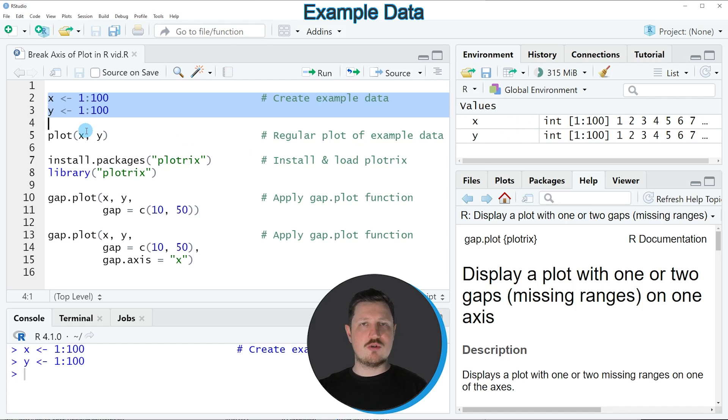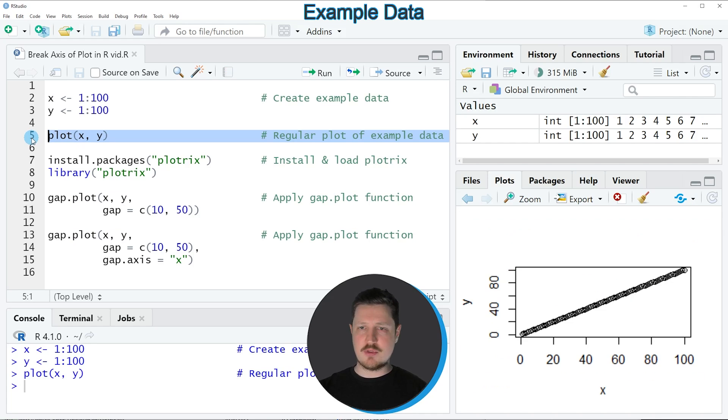So if you want to draw these data in a regular plot using base R, then we can apply the plot function as you can see in line 5 of the code and in this function I'm specifying the names of our two vector objects X and Y. So if you run line 5 of the code, you can see at the bottom right of RStudio that a new plot is appearing which is showing a scatter plot and as you can see both of our vector objects X and Y are ranging from 1 to 100.